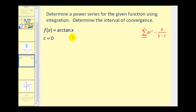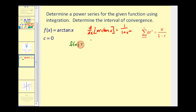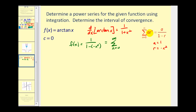Let's go ahead and take a look at another problem where we can use integration to help determine a power series for a given function. Here we have f of x equals arctangent x, and we want the power series centered around x equals zero. This obviously does not fit the form a divided by one minus r. However, the derivative of arctangent x does. The derivative of arctangent is equal to one divided by one plus x squared. So if f of x equals one over one plus x squared, we can rewrite this as one over one minus negative x squared. This fits the form we're looking for, so A is equal to one and r would be negative x squared.